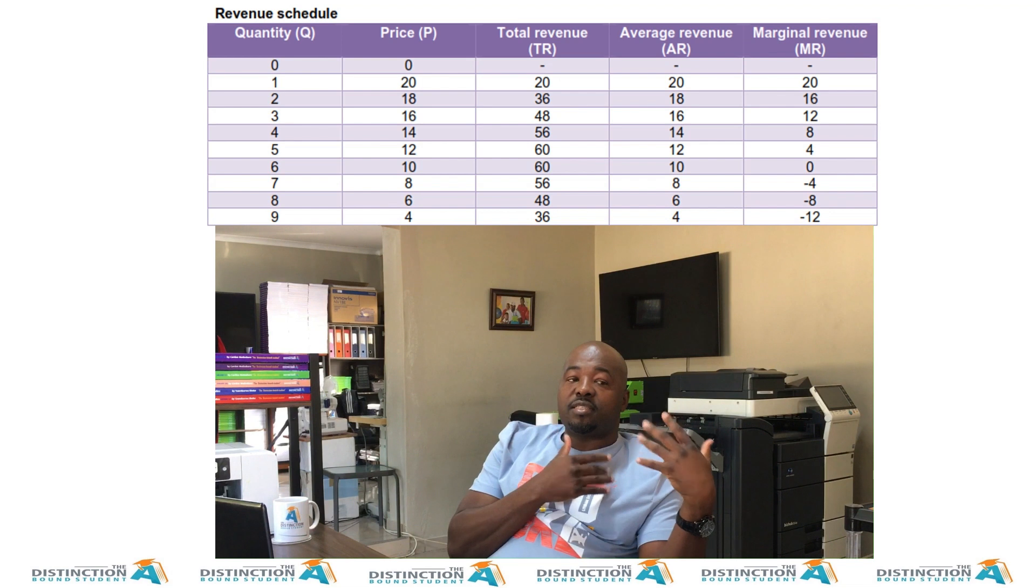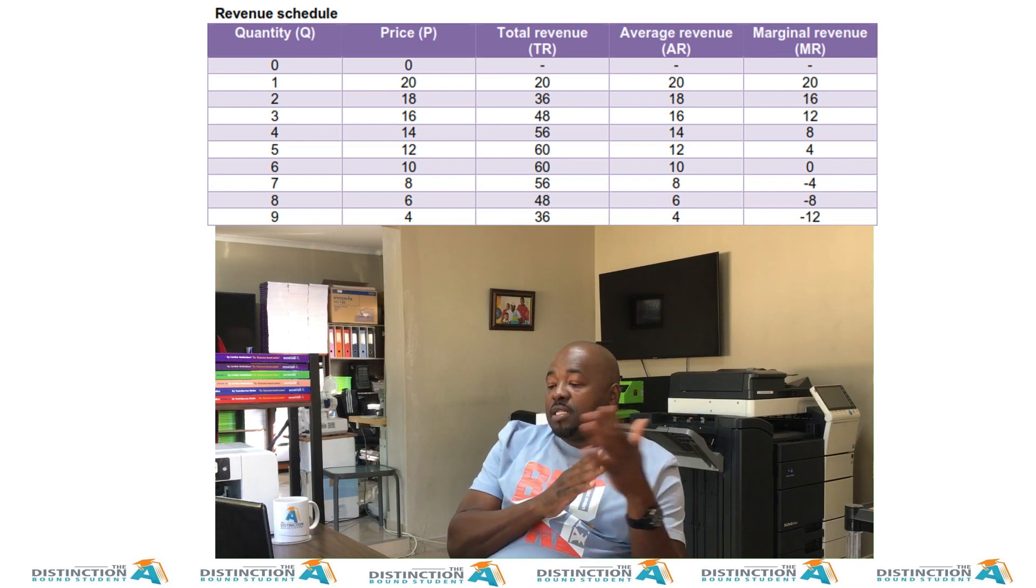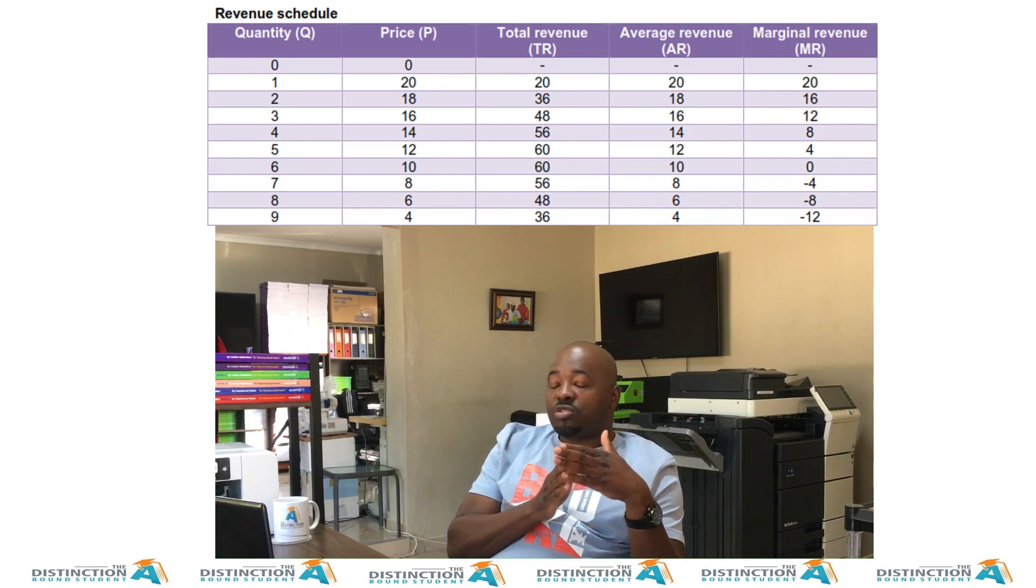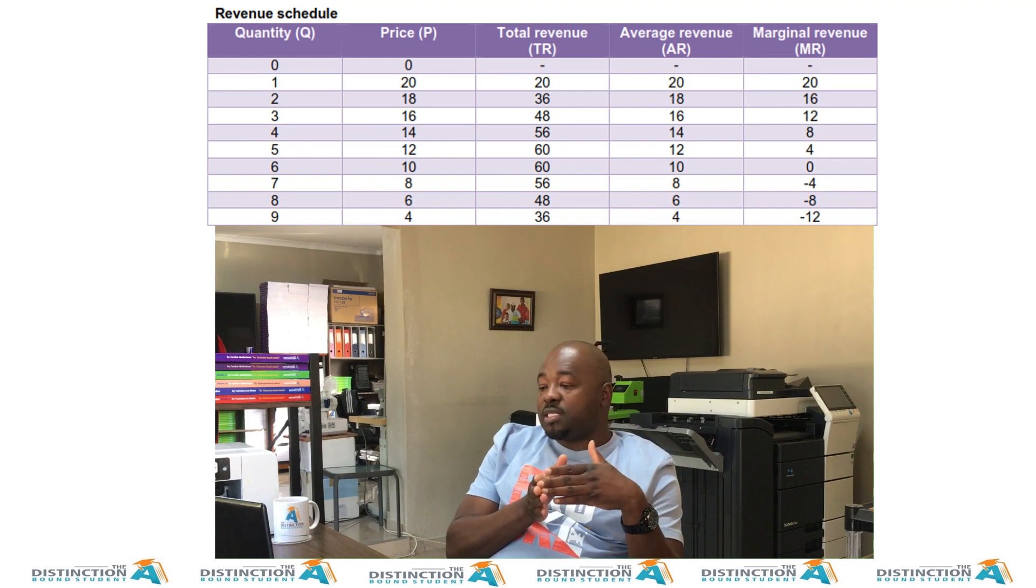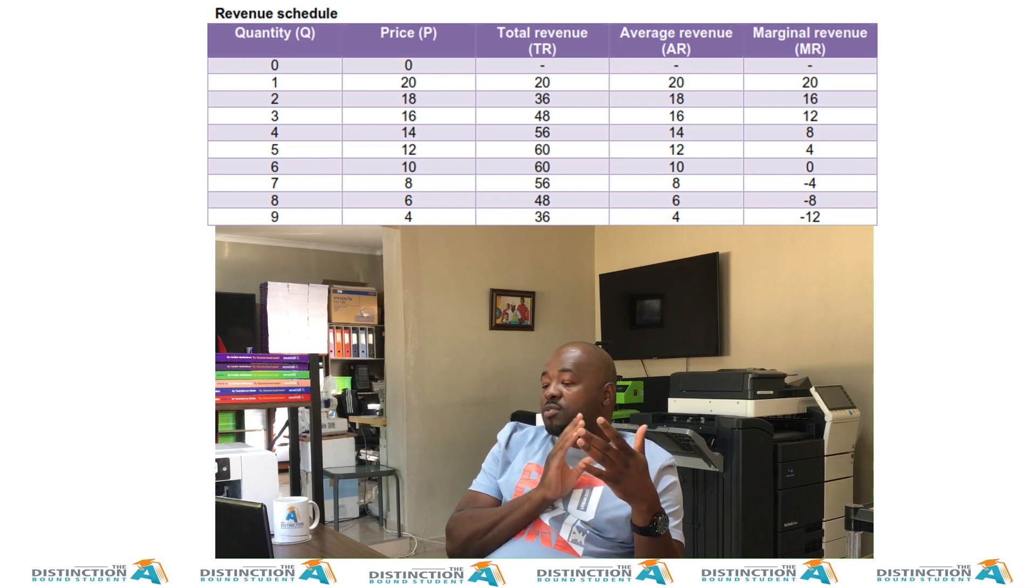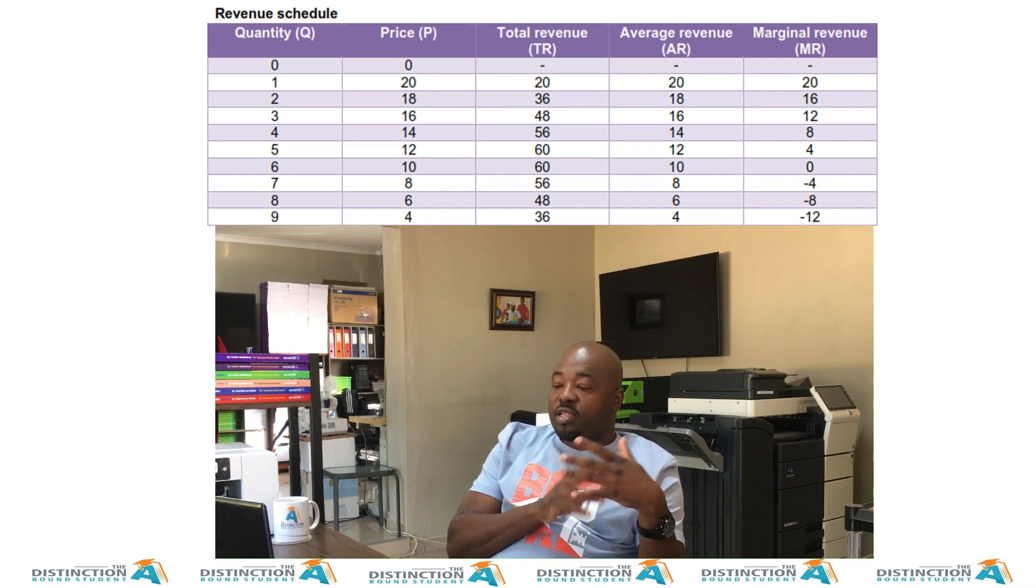So to look at each price, yes, is determined by demand. But then the next one, total revenue, we say price times quantity. The next one, marginal revenue, change in TR divided by change in Q. The next one, average revenue, TR divided by Q.